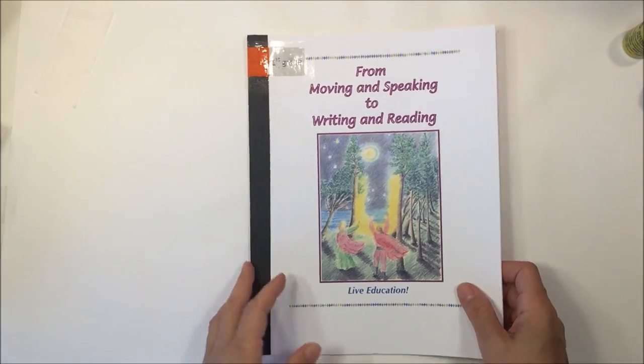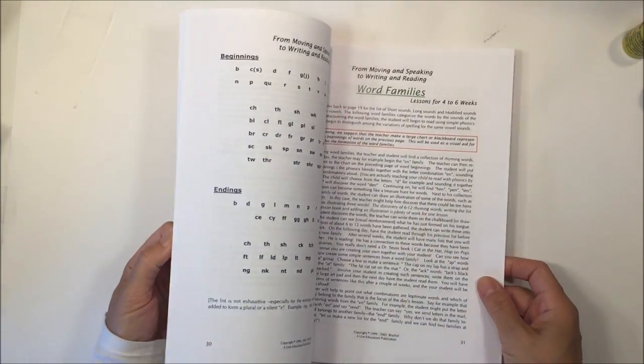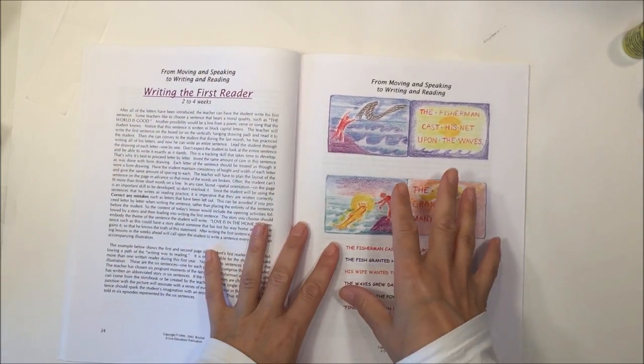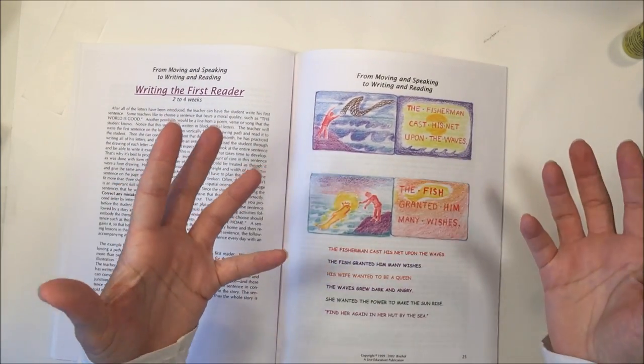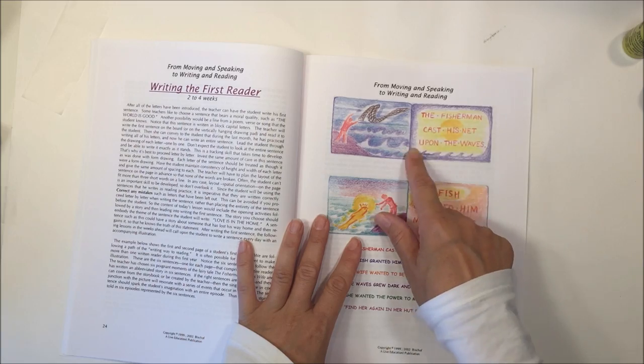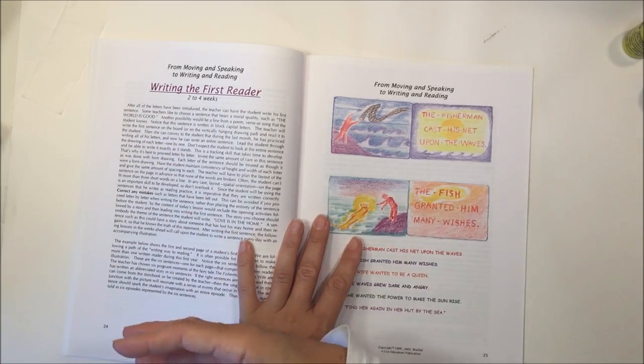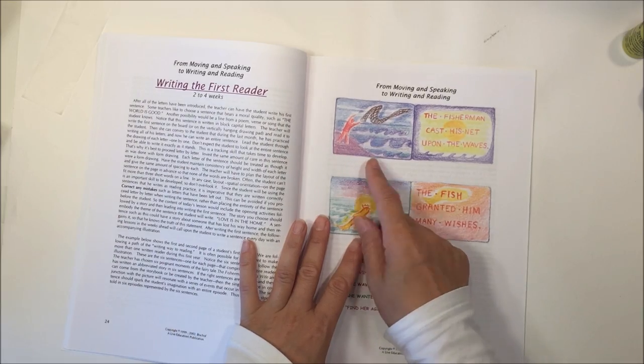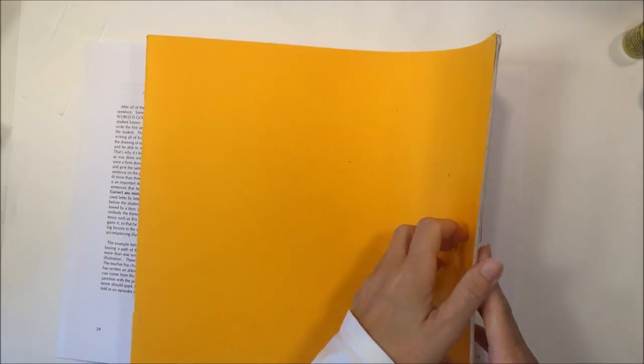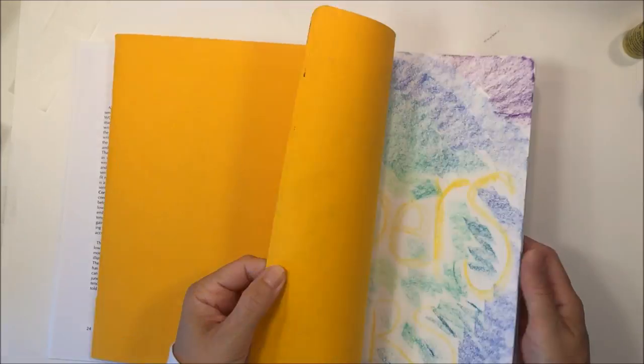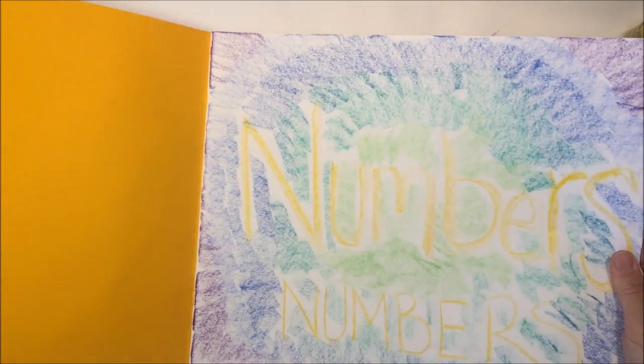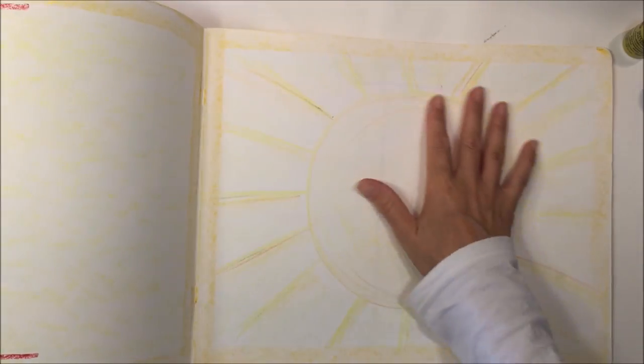The last book is From Moving and Speaking to Writing and Reading. What's different about the Waldorf approach to reading and writing is that instead of getting little readers like Bob books, the child makes his own. It starts with all capital letters, simple sentence based on a story that's been read, and a simple illustration. Once the child is done with his book, he's got something that he can read. This is a different main lesson book, but I just want to show you that it would be something similar to this where he's written the sentence. This is probably a good size, 22 by 17 inches.